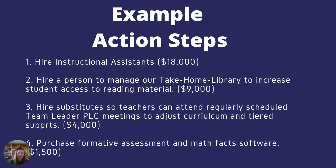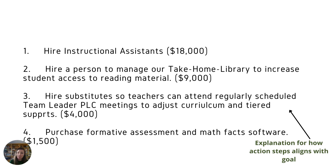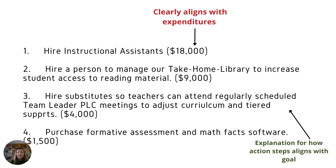So what makes this action step so successful? First, it clearly explains how the action steps align with the goal. Rather than just telling us that they're going to hire a person for the take-home library, it says they're going to hire someone to manage the take-home library so that student access to reading material will increase. Additionally, the substitutes are being hired so that teachers can attend PLC meetings. It's helpful to include a little bit of extra wording to explain how the expenditure item will help you accomplish your goal. Another really helpful tip is to include in parentheses exactly how much money is being allotted for that particular action step. This makes it very clear where things are being spent. That can be in sentence form or in parentheses at the end of the line. Not all action steps will have an expenditure, but when they do, be sure to put it in the line.